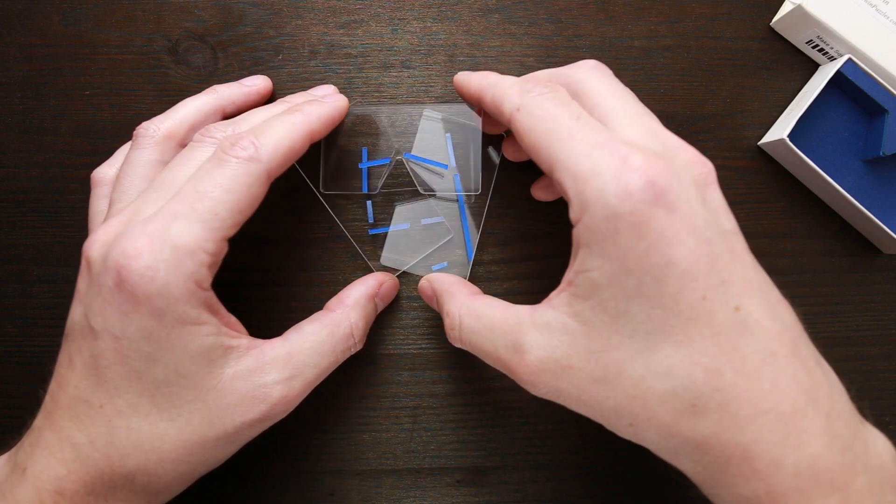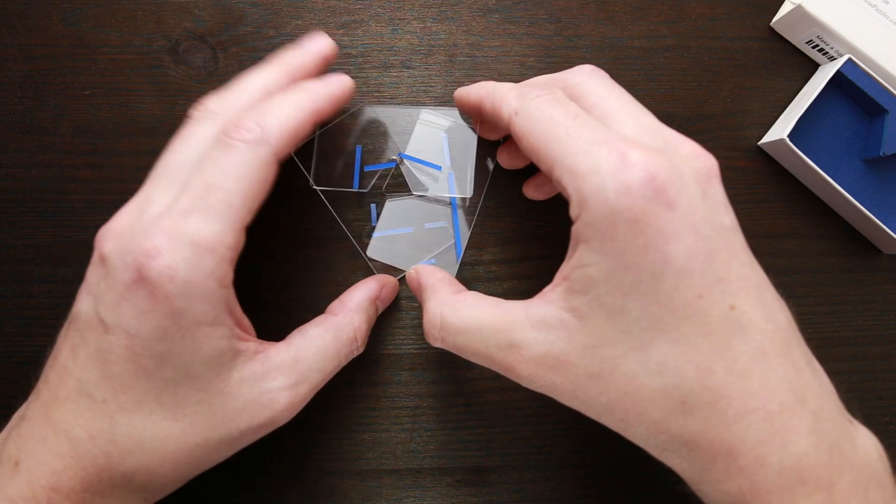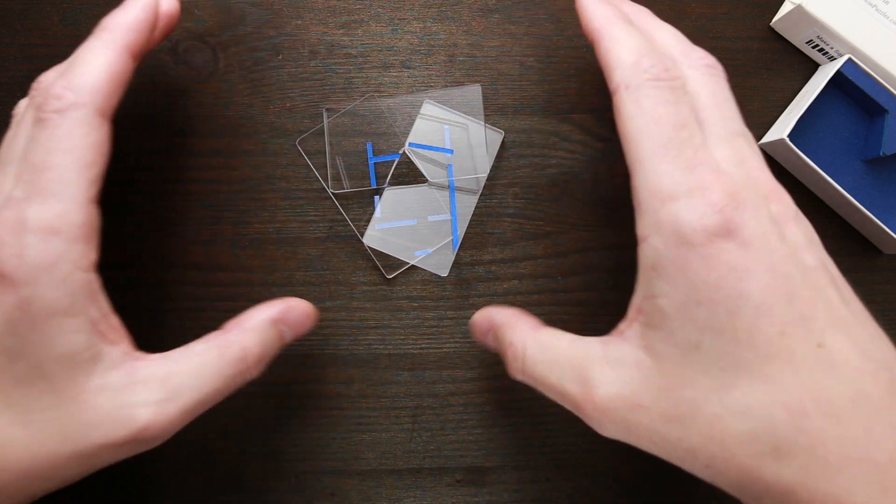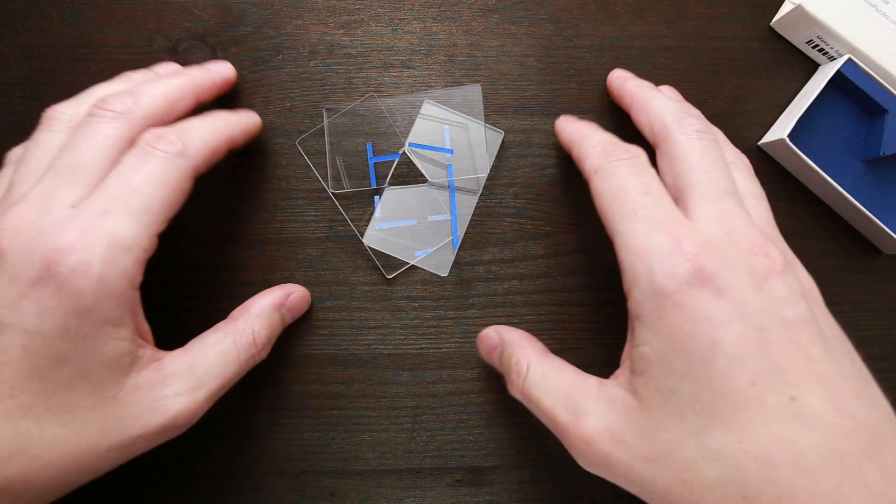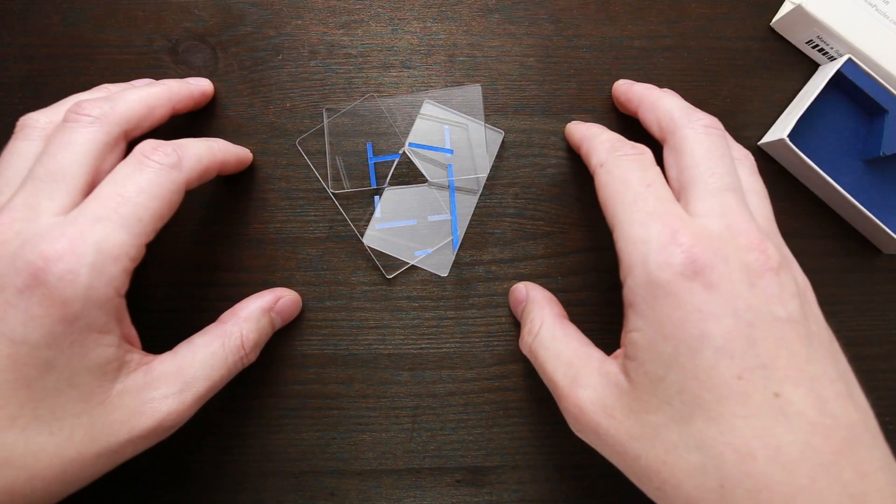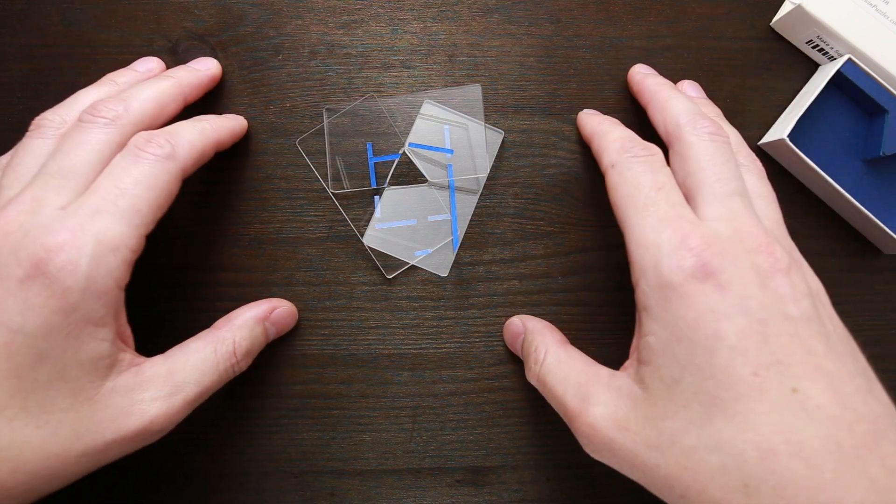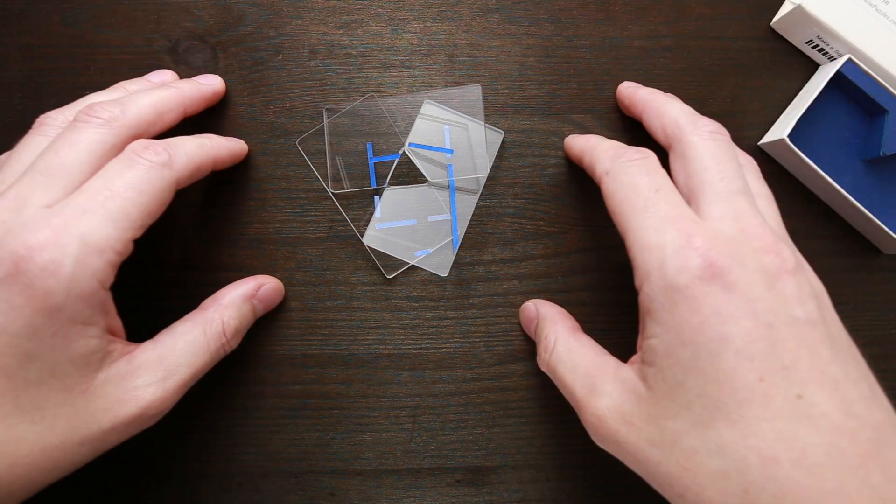But when you find the right spot, they're going to stay in this shape. And that's going to be the solution. But from this point, it doesn't look like a square. It looks like random lines.